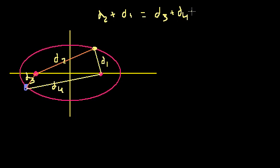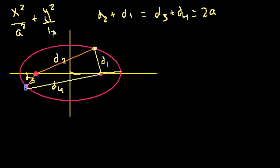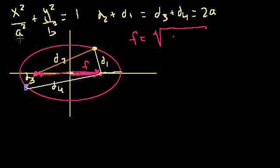We learned in the last video that this quantity is actually going to be equal to 2a, where a is the semi-major radius. The formula for the ellipse is x² over a² plus y² over b² equals 1. The focal distance — the distance from the center of the ellipse — is just the square root of the difference of these two numbers. If a is larger, it would be √(a² - b²), which is the case in this ellipse.